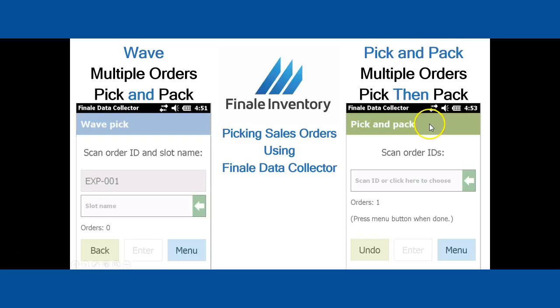Pick and pack allows you to scan the order IDs off the packing slips — you can scan 10, 20, 30, or 50 orders right into the scanner. When you're done, you tell the scanner you want to go pick all the items for the total number of orders scanned in. It creates a consolidated pick list and drives you through the warehouse to just get the items — don't worry about what orders they go on, just pull the items and bring them back to the central packing location. Then you go through a separate pack process.